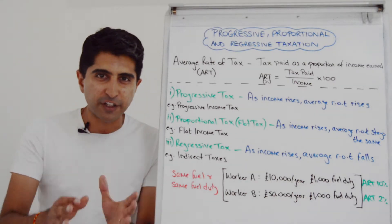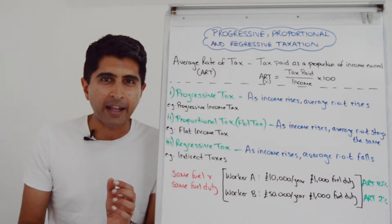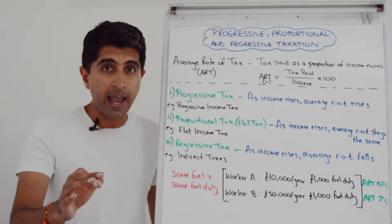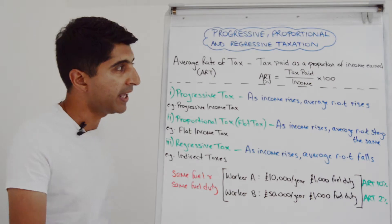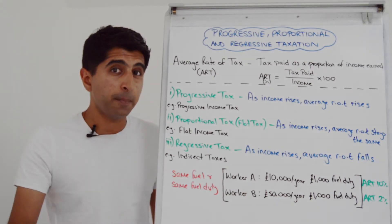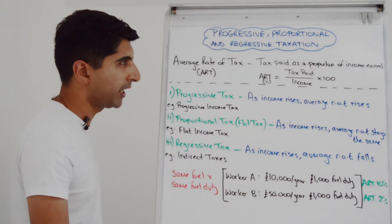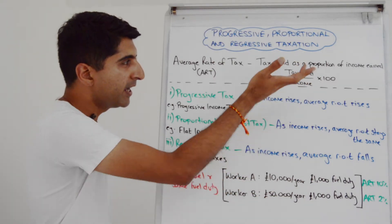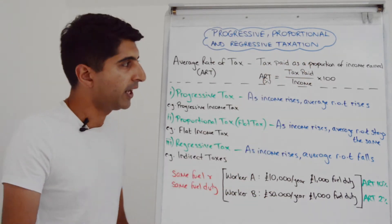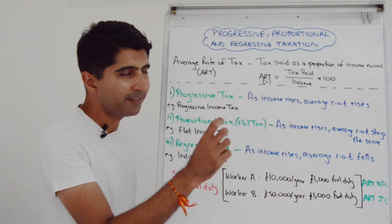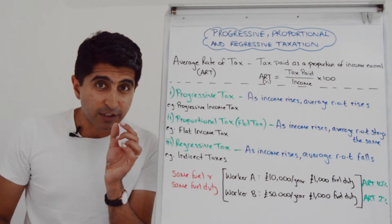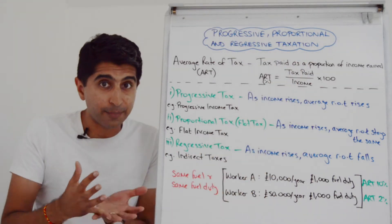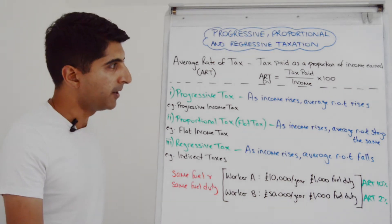To get our head around these different types of taxes, we need to understand the average rate of tax, also known as the ART. As a word definition, it's simply the amount of tax paid as a proportion of total income earned. There is an equation to work it out: you take the amount of tax paid, divide by total income, times by 100. You get a percentage that says the amount of tax paid as a proportion of total income earned.